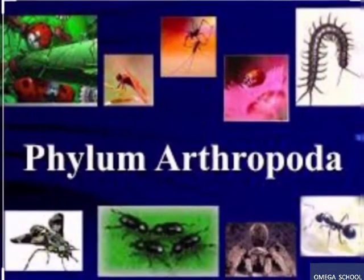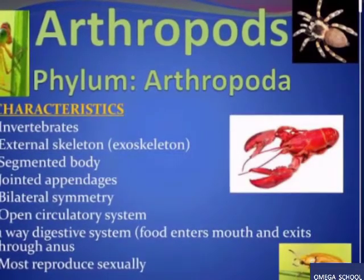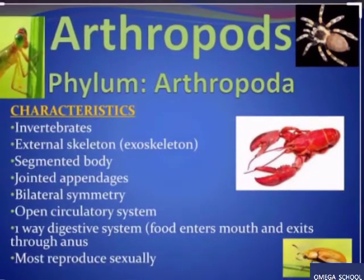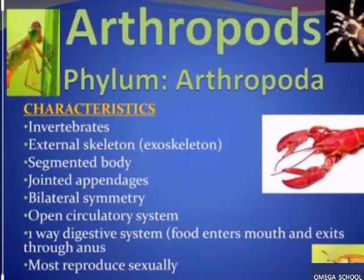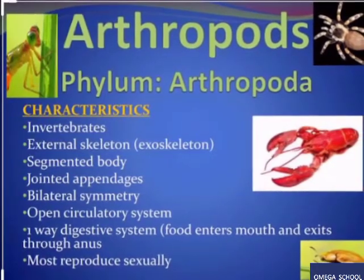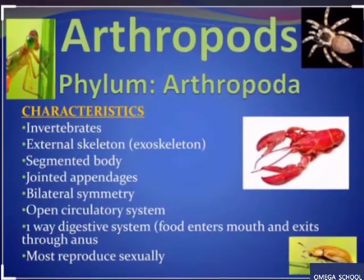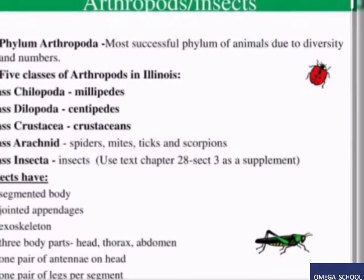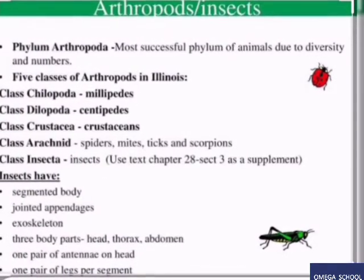The next one is the phylum Arthropoda. The word 'arthropod' comes from the Greek: 'arthro' means joint and 'pod' means foot. They have a well-developed nervous system with a complete gut running from mouth to anus. Arthropods can be divided into five classes based on the number of limbs, number of antennae, and body parts.